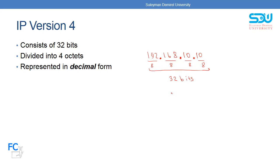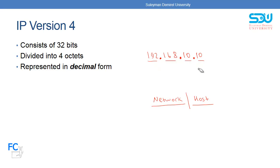An IP address consists of two parts. One part is called the network part, and another part is called the host part. Let's imagine what the network address and the host address are inside the IP address. Our IPv4 address is split into two parts — the part from the left side belongs to the network and the part from the right side belongs to the host.